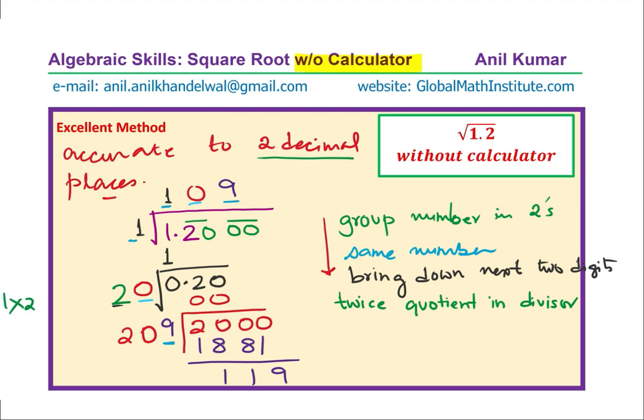You get the idea. You can add two more zeros, bring them down, and divide further by twice this number, which is 218. And writing the number, which is same in divisor and in quotient, you can get accurate answer till three decimal places. But since we want it till two decimal places, we know that the solution for this is equal to 1.09. You get the idea. That is how we can calculate. I would like you to continue and find the answer to three decimal places. I hope you have understood the process.